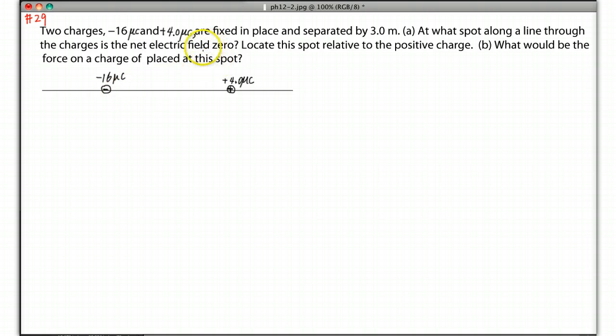Net means you add the electric field created by each charge together, so you should make it being zero. Since electric field is a vector, you add it together equals zero. That means you should have two fields at one spot where their electric fields have different directions.